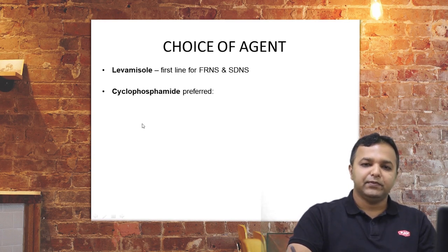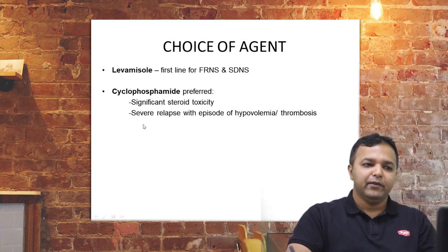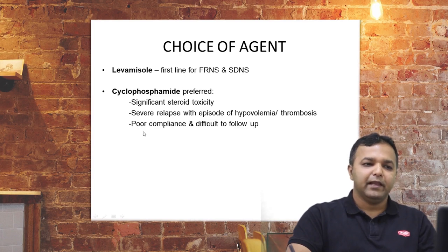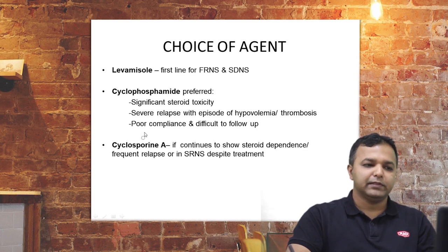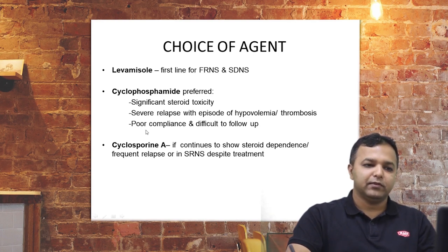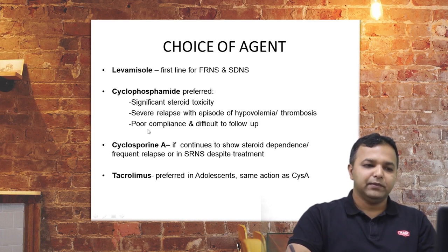Cyclophosphamide is preferred especially when there is significant steroid toxicity, severe relapses with features of hypovolemia or thrombosis, or when there is poor compliance and difficulty with follow-up. Cyclosporine A is preferred if the patient continues to show steroid dependence, frequent relapses, or steroid-resistant nephrotic syndrome. Tacrolimus is preferred in the adolescent age group and has the same action as cyclosporine.